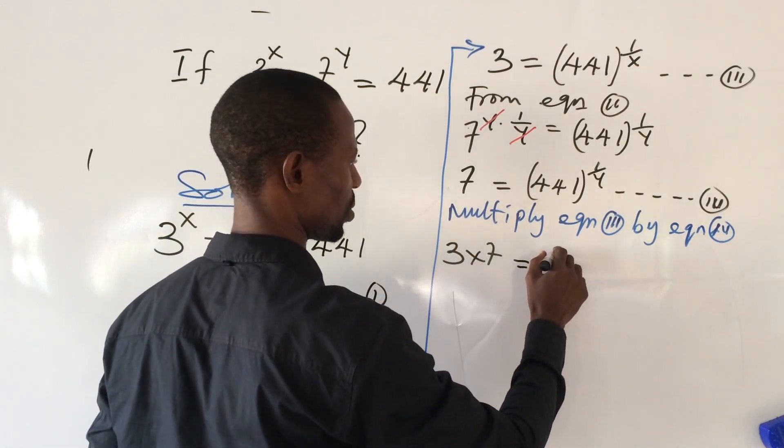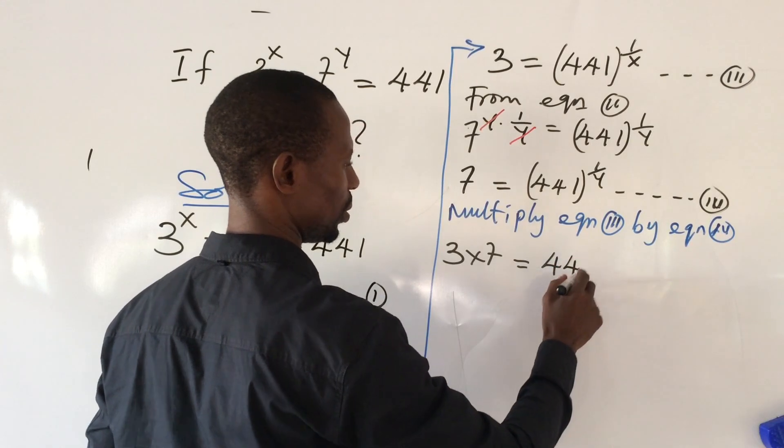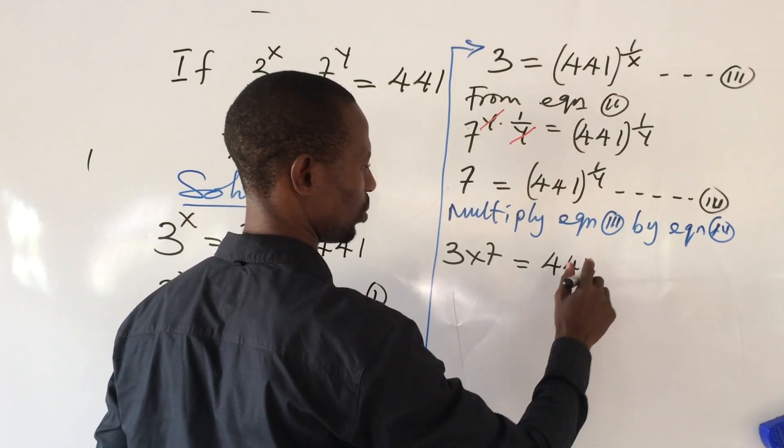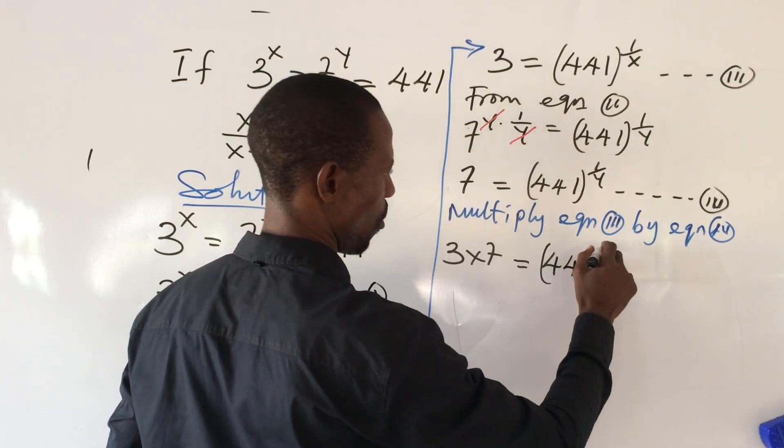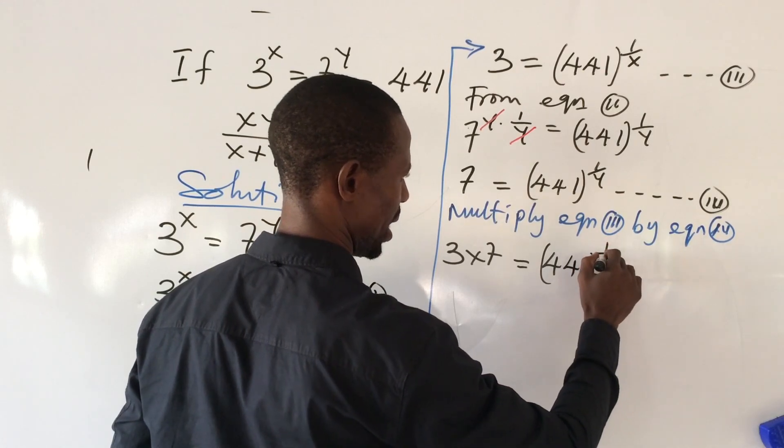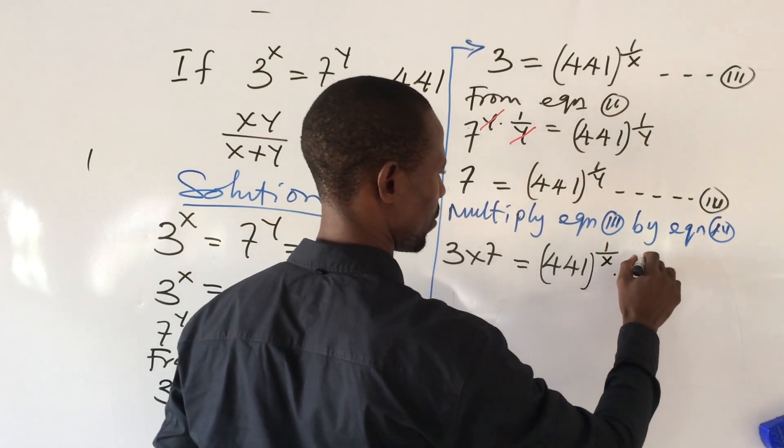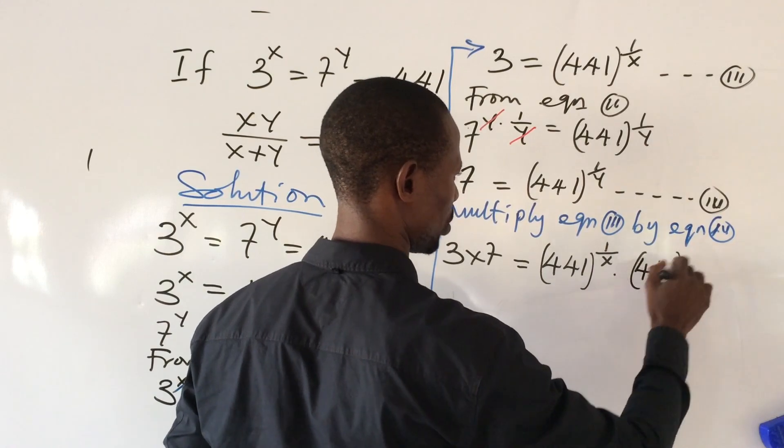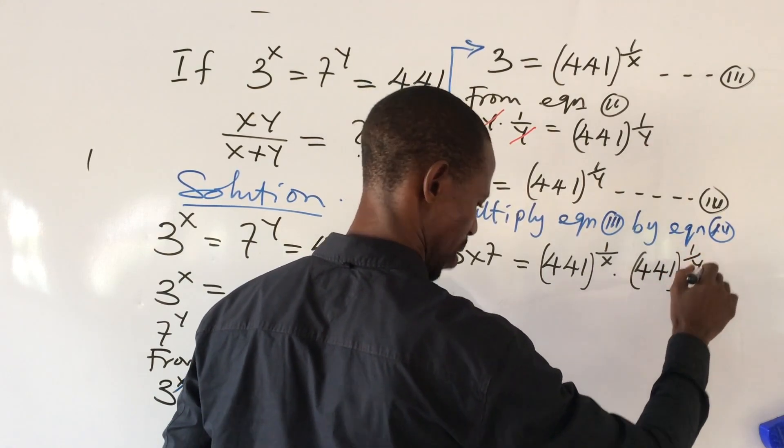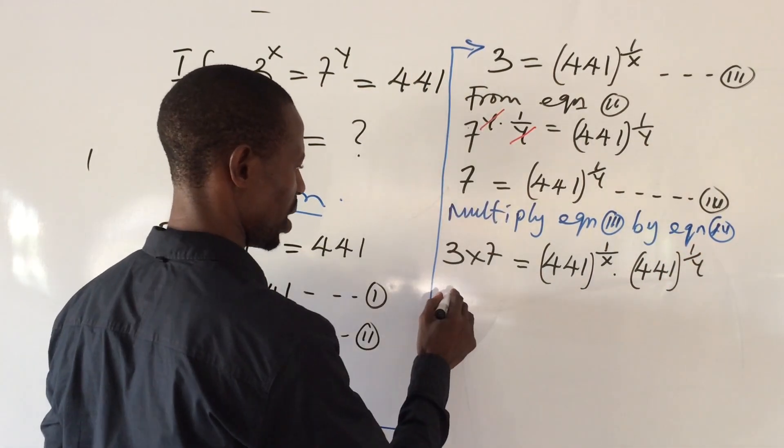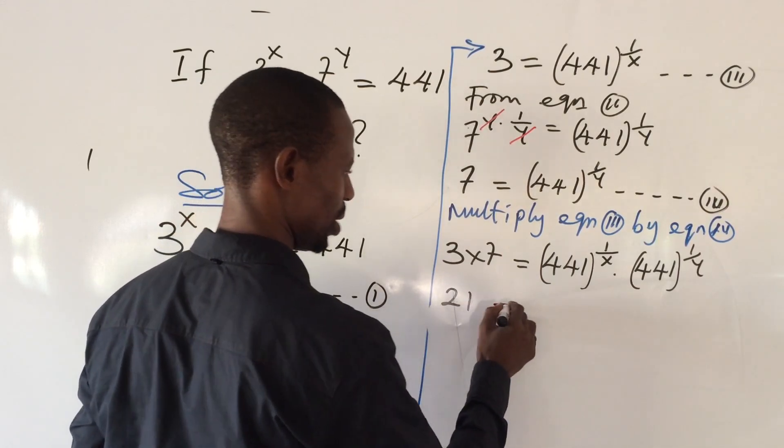Equation 3 is 3 then times 7 equal to, here is going to give us 441 to the power of 1 all over x times 441 to the power of 1 all over y.